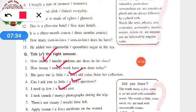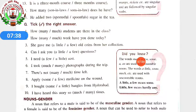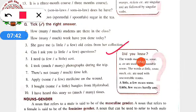Till question 5, I have done for you. The rest 5 you have to do by yourself. Before doing it, kindly read the 'Did you know': the words many, a few, some, a, an are used with countable nouns. The words a little, some, much, etc. are used with uncountable nouns. 'A little' and 'a few' mean some; 'little' and 'few' mean hardly any.